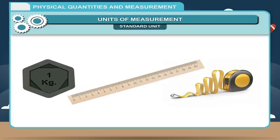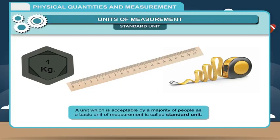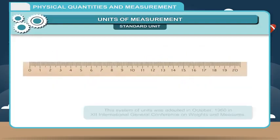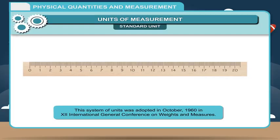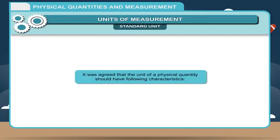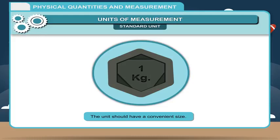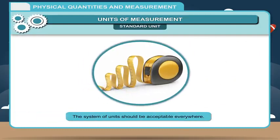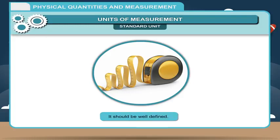Standard Unit: To overcome variations in measurement, the need for a system of standard units was felt. A unit which is acceptable by a majority of people as a basic unit of measurement is called a standard unit. The internationally accepted system of units is called SI — Standard International Units. This system was adopted in October 1960 at the 12th International General Conference on Weights and Measures. It was agreed that the unit of a physical quantity should have the following characteristics: 1. The unit should have a convenient size. 2. Its value should not change with respect to place and time. 3. The system of units should be acceptable everywhere. 4. It should be well defined.